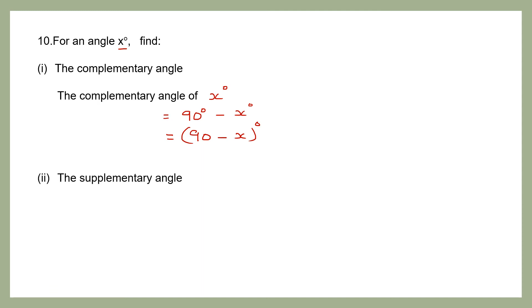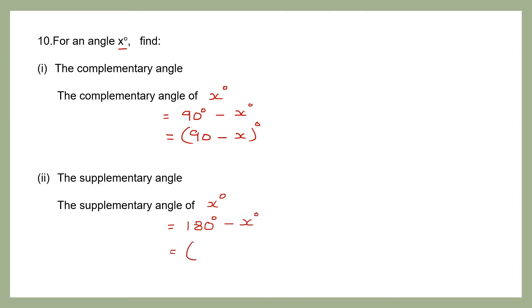Now find the supplementary angle for angle x degrees. When we think of supplementary, we need to think of 180 degrees. So the supplementary angle of x degrees will be 180 degrees minus x degrees. I will rewrite that as (180−x) degrees.